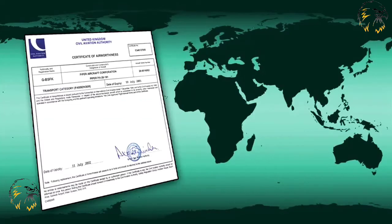Similarly, with aircraft registration, states are also duty-bound to ensure that all registered aircraft are airworthy, and are issued with a certificate of airworthiness. Annex 8 of the Convention deals with the airworthiness of aircraft, and you will study this in a later lesson.